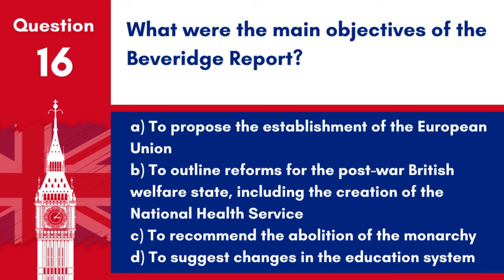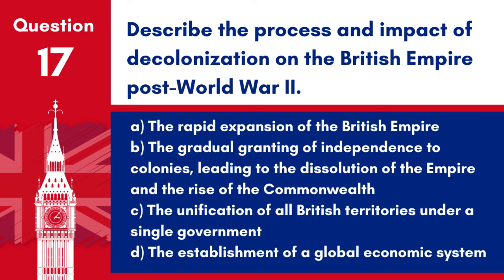Question 16: What were the main objectives of the Beveridge Report? a. To propose the establishment of the European Union. b. To outline reforms for the post-war British welfare state, including the creation of the National Health Service. c. To recommend the abolition of the monarchy. d. To suggest changes in the education system. Answer: b. To outline reforms for the post-war British welfare state, including the creation of the National Health Service. The Beveridge Report was instrumental in laying the foundation for the modern UK welfare state, proposing widespread reforms to address want, disease, ignorance, squalor and idleness.